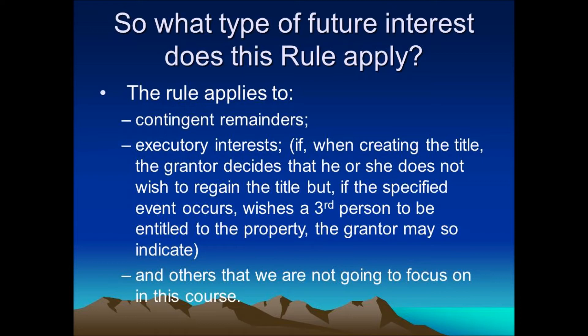When does the perpetuities period begin? It begins at the time the interests are created. This means the lives-in-being plus 21 years period begins to run, and the measuring lives used to show the validity of an interest must have existed at that time. For example, if we're dealing with a will, the perpetuities period begins to run on the date of the testator's death.